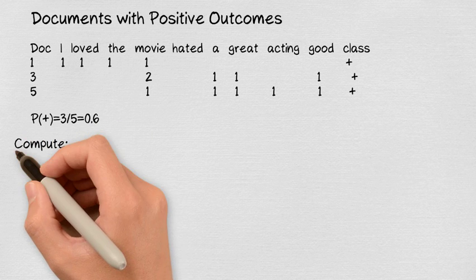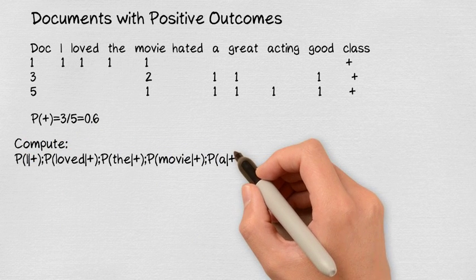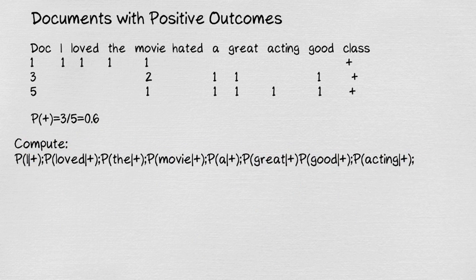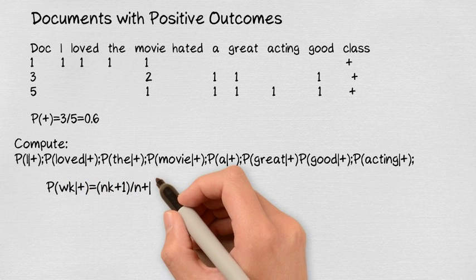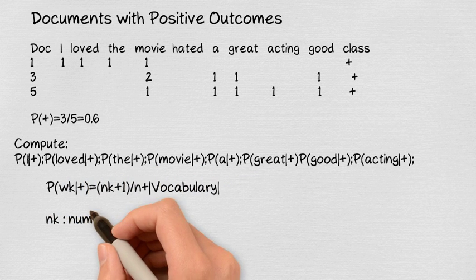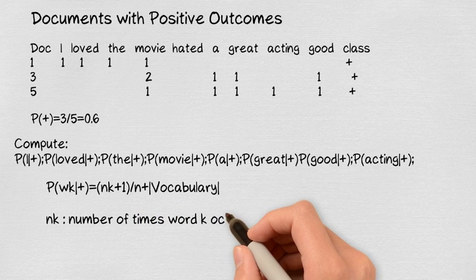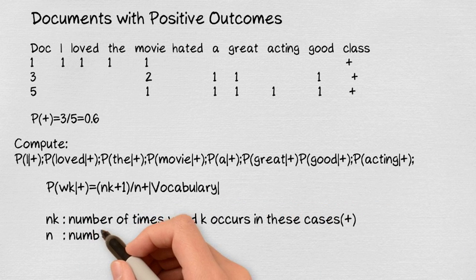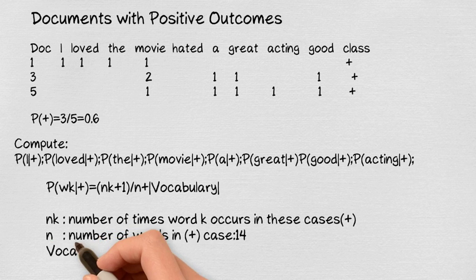Now we will have to calculate the probability of each word being positive. The formula to calculate this is Nk, which is the frequency of the word or the number of times the word occurs, N, which is the total number of positive words or negative words. Vocabulary is the total number of unique words.